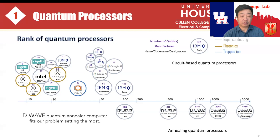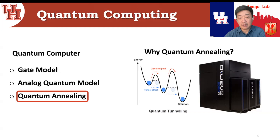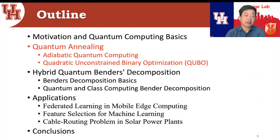In this talk we concentrate on D-Wave to solve optimization problems. There are three types of quantum computing: gate model (most general), quantum analog, and quantum annealing. Quantum annealing works like this: if you fall into a local optimum, classically you need to climb the hill. But with quantum tunneling, you can directly tunnel to a better local or even global optimum.